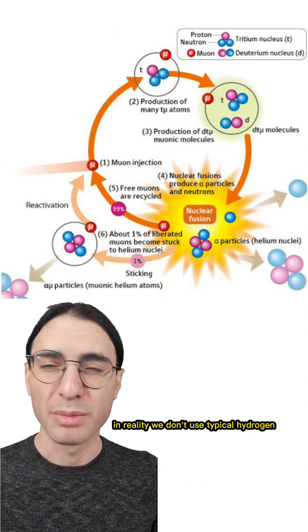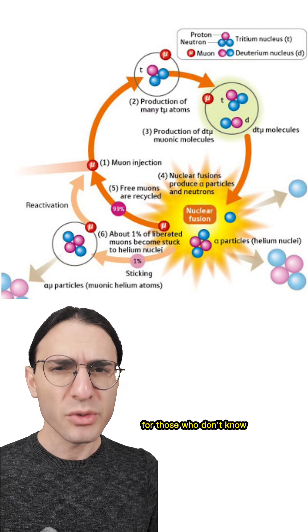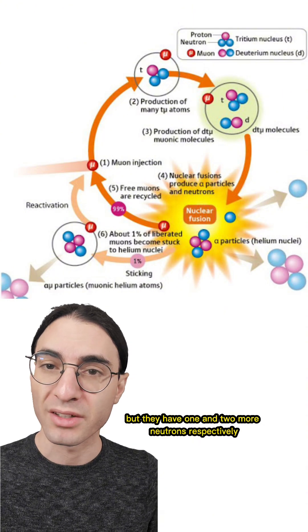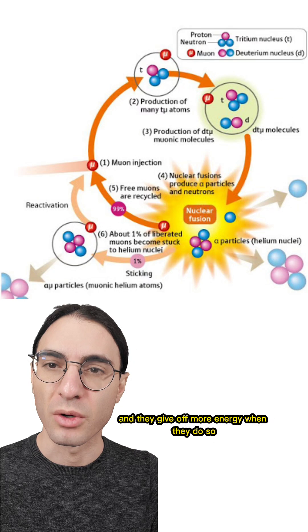In reality, we don't use typical hydrogen because it's a bit harder to fuse. Instead, you take a deuterium-tritium ion. For those who don't know, deuterium and tritium are like hydrogen, but they have one and two more neutrons respectively, so they're quite a bit heavier. They also want to fuse more easily, and they give off more energy when they do so.